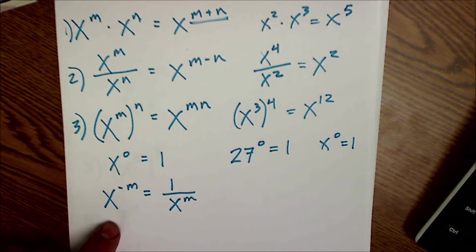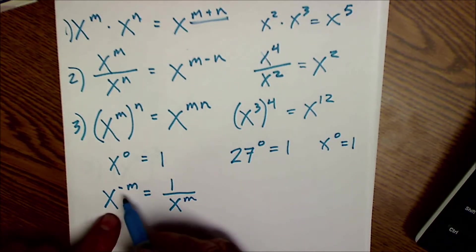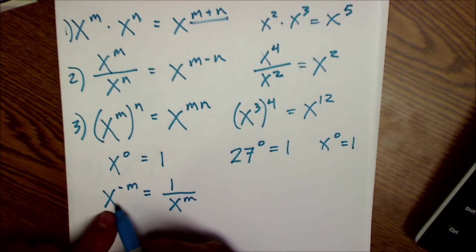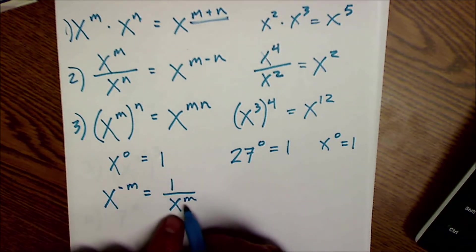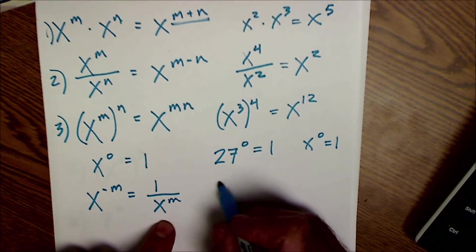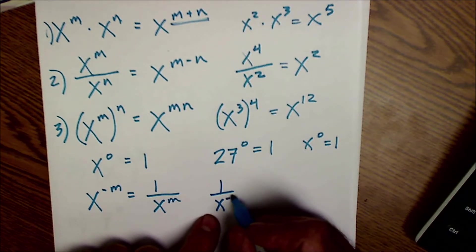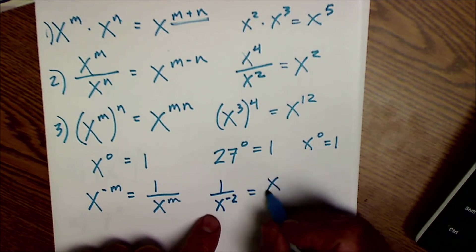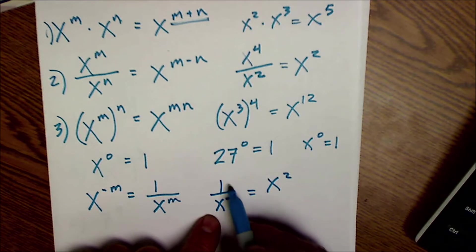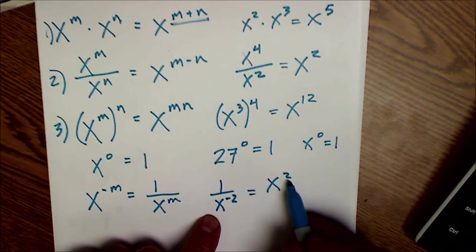And then the negative rule is it could always be made positive by reciprocating it. So if I have a base to the power of a negative exponent, I can make it positive by putting in the denominator. And also if I had a negative exponent down here, 1 over x to the negative 2, that would be equal to x squared. So I can move it to the top, to the numerator, and make it positive.